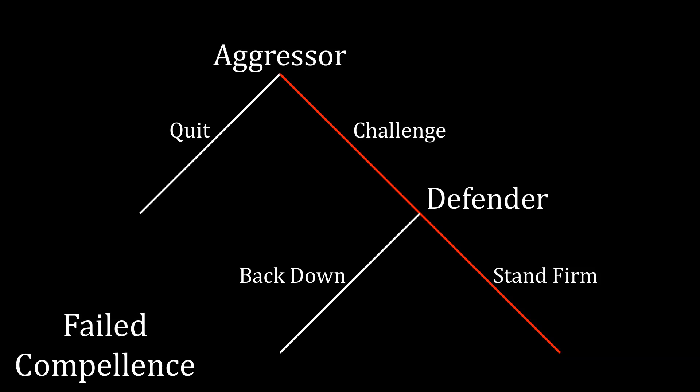Similarly, we can define failed compellence by looking at situations where an aggressor challenges the status quo and then the defender stands firm. The aggressor wanted to get something out of the defender, and the defender said no — they would rather fight over the issue than just give it up. The aggressor has failed to compel something out of the defender. The aggressor might ultimately get what it wants, but not by forcing the defender to back down — rather by defeating the defender on the military battlefield. And in the event of conflict, it's fully possible the aggressor might lose, suffering the cost of conflict without achieving its goal.